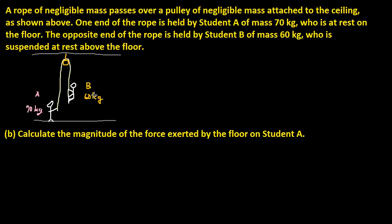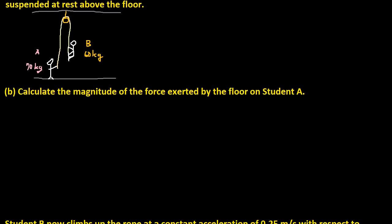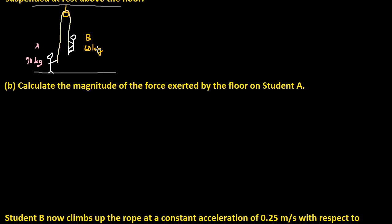So we have the student problem — pulling on the rope. We have a rope of negligible mass that passes over a pulley of negligible mass attached to the ceiling. One end of the rope is held by Student A, mass 70 kg, who is at rest on the floor, and the opposite end is held by Student B, mass 60 kg, who is suspended at rest above the floor. They aren't accelerating, so their net force is zero.